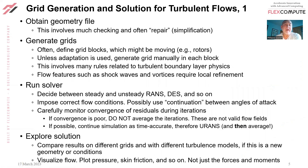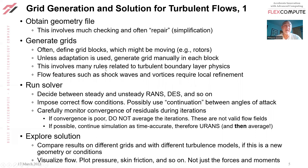For grid generation, you're going to obtain a geometry file. It needs to be watertight, so there's going to be a lot of checking and often some repair or simplification. For example, if you have a car with a gap between the door and the body, you don't want to represent that in the CFD. Airplanes also come with many parts — if there's only a nanometer between two parts, you don't want to put grid in that gap. For manual grids, you will choose grid blocks one by one, possibly moving if you're doing rotating machinery. Flow features such as shock waves and vortices require local refinements.